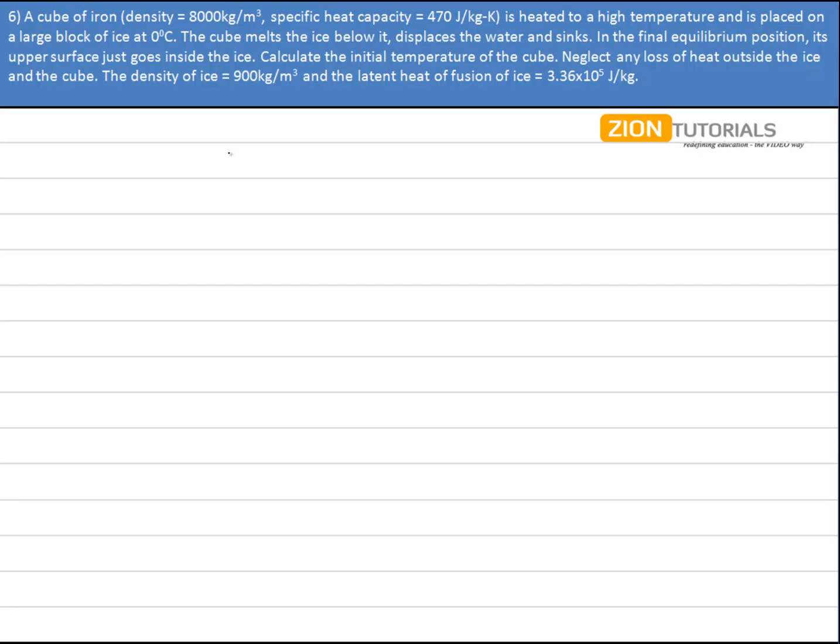Now this question is little bit tricky but it is very simple. A cube of iron is heated to a very high temperature and is placed on a large block of ice at 0 degree celsius.